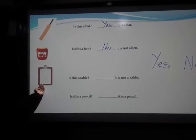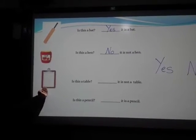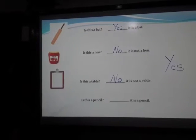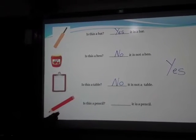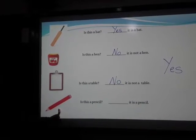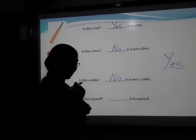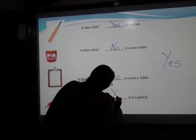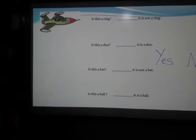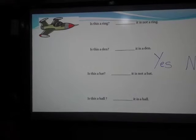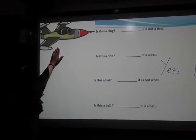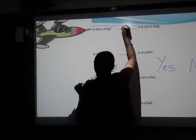Is this a table? You are using this. But is this a table? No. This is also used by you, you are using this always. Is this a pencil? Are you using this? Yes, it is a pencil. And here, some more things are there. Is this a ring? No, it is not a ring.